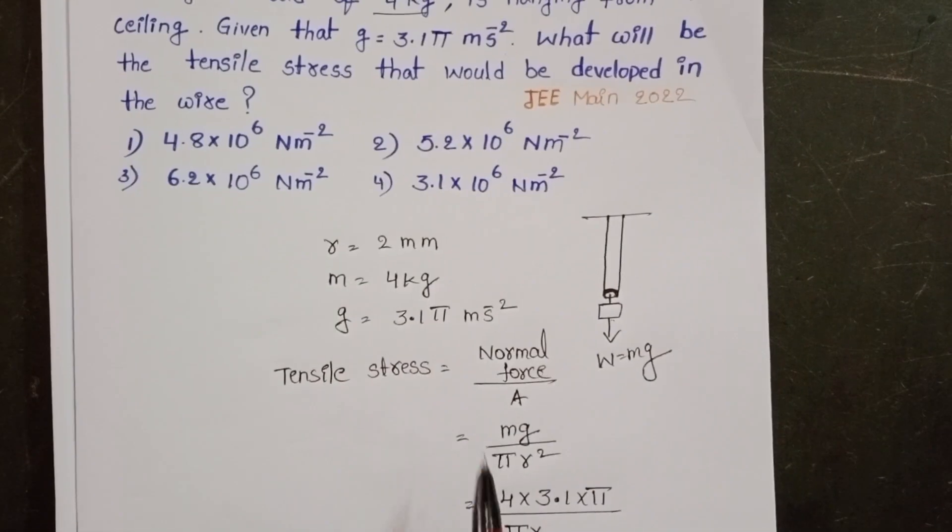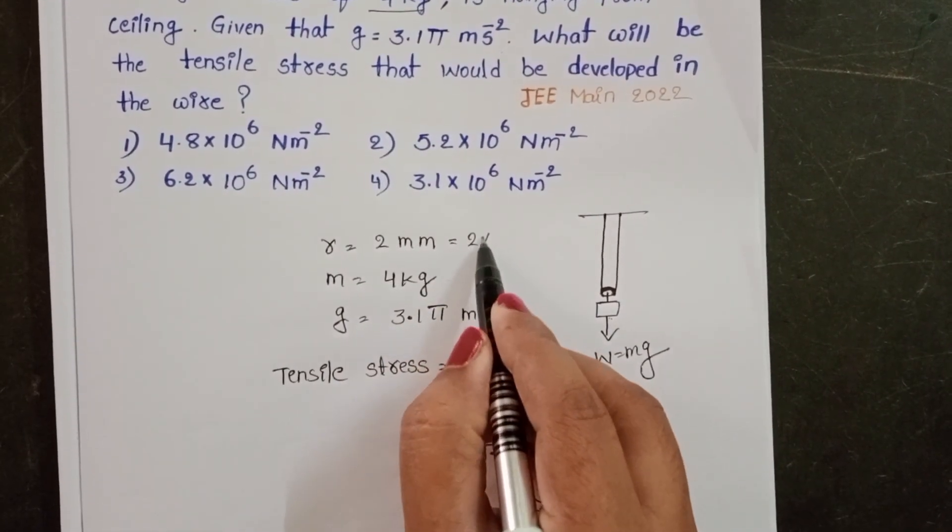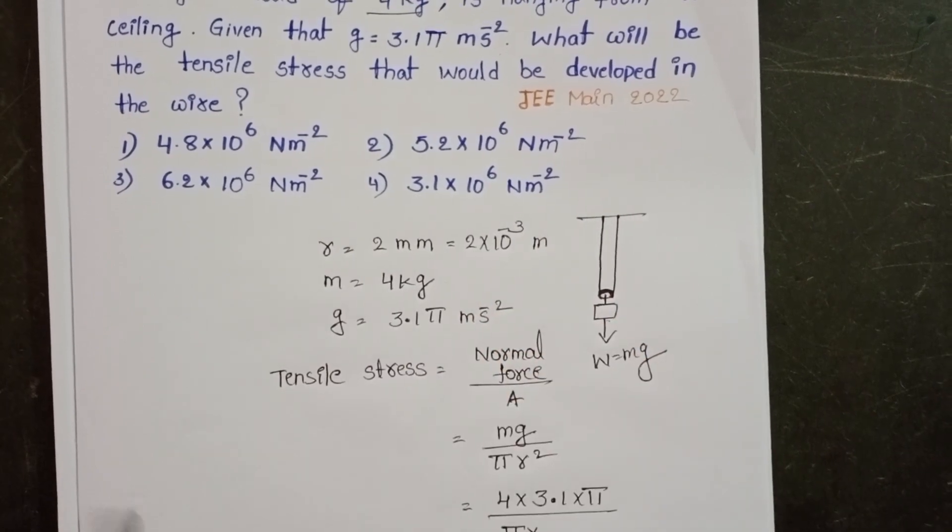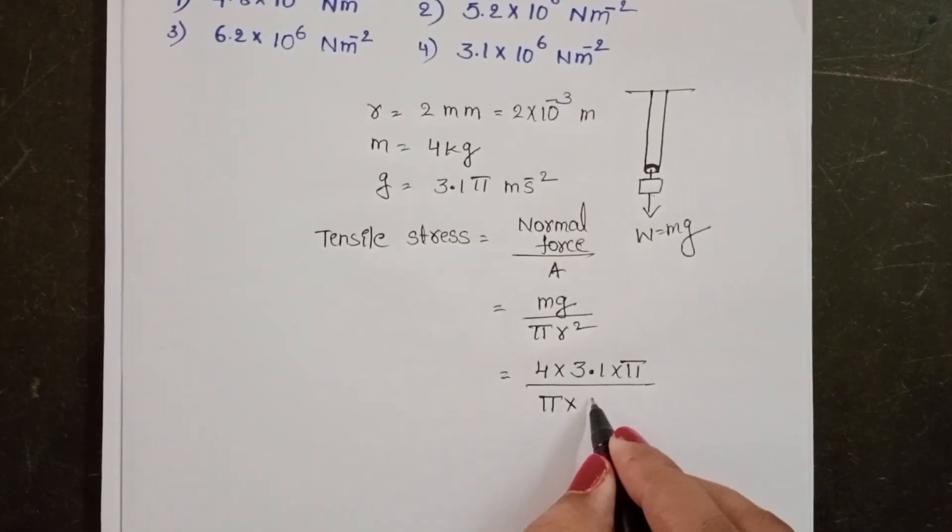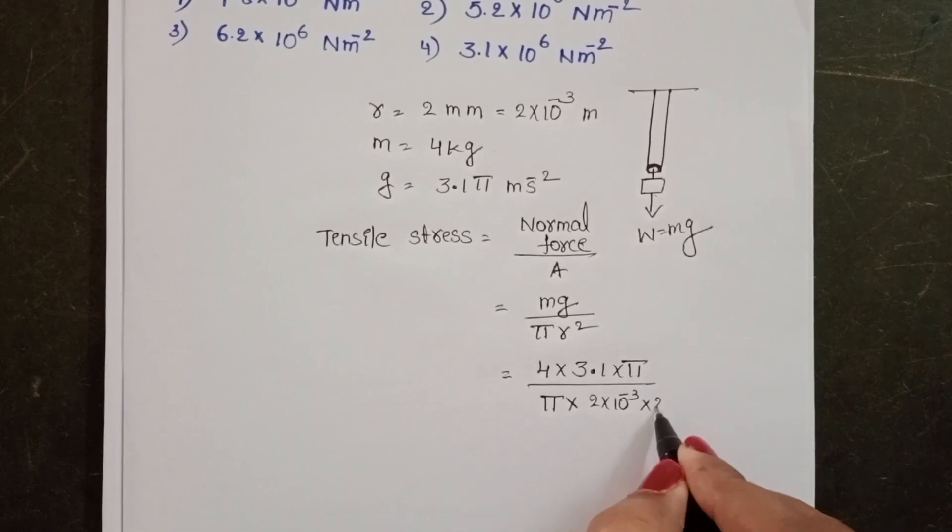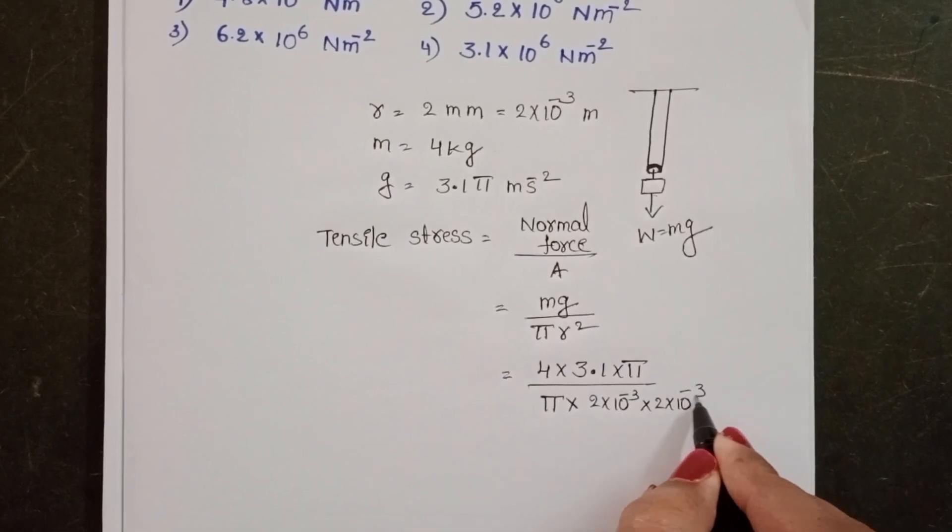Here we know radius is 2 mm. Convert into meters, 2 into 10 power minus 3 meter, 2 into 10 power minus 3 into 2 into 10 power minus 3.